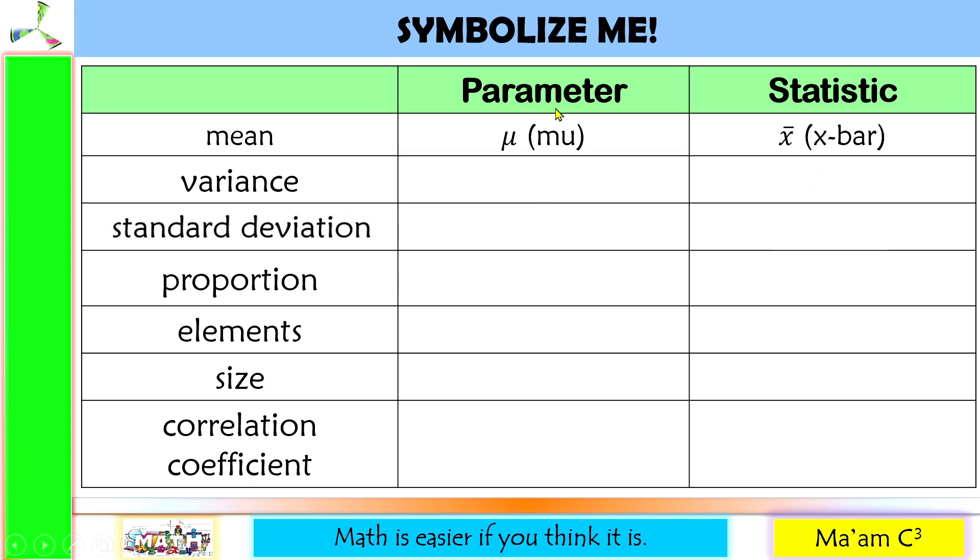In variance, for parameter, we use sigma squared. And for statistic, we use s squared. For standard deviation, for parameter, we use sigma. And for statistic, we use s.